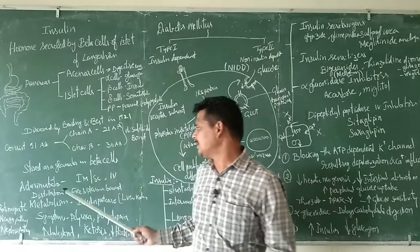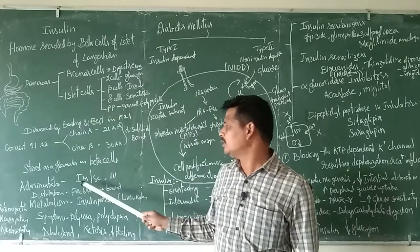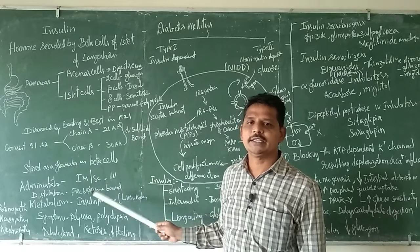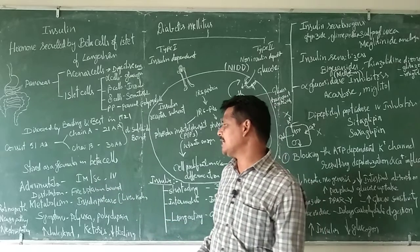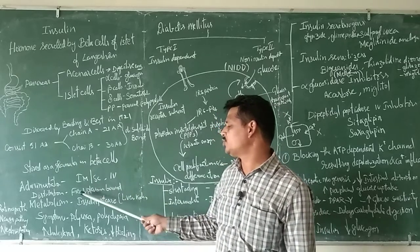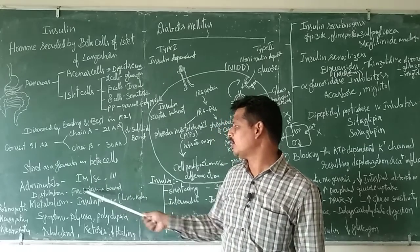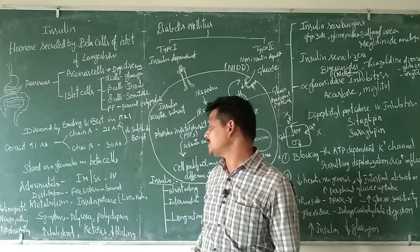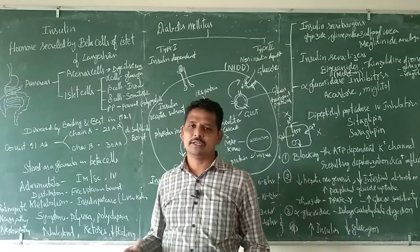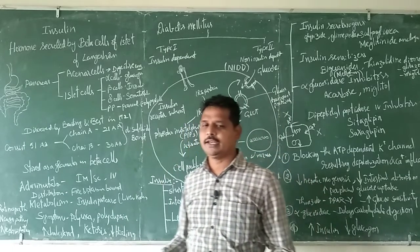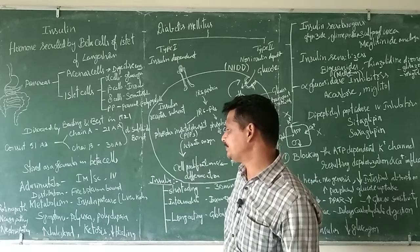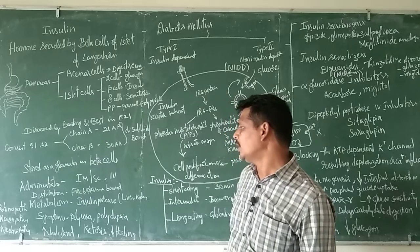Normally these drugs are given by intramuscular, subcutaneous, or intravenous routes. Insulin has good distribution and can be found free or plasma-bound. Metabolism is done by the insulin protease enzyme, and it is degraded and excreted through the urine and bile.